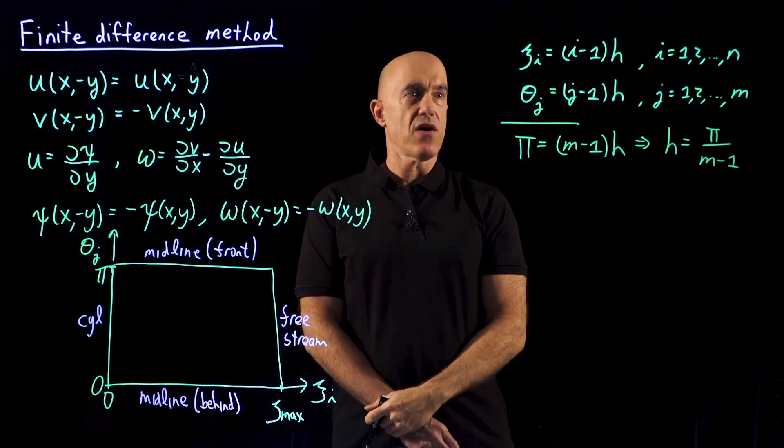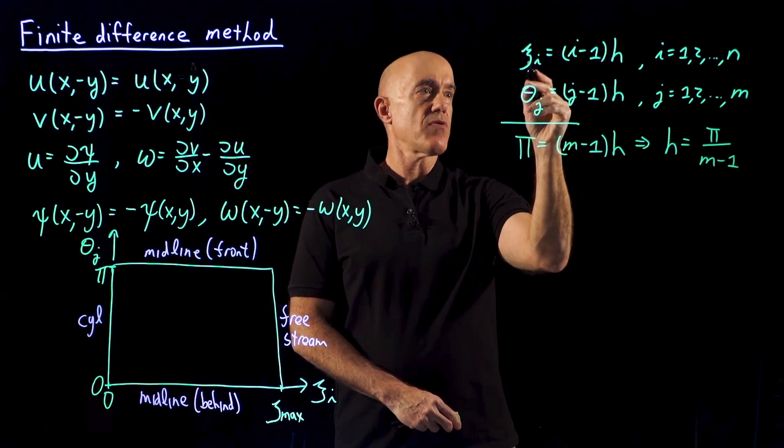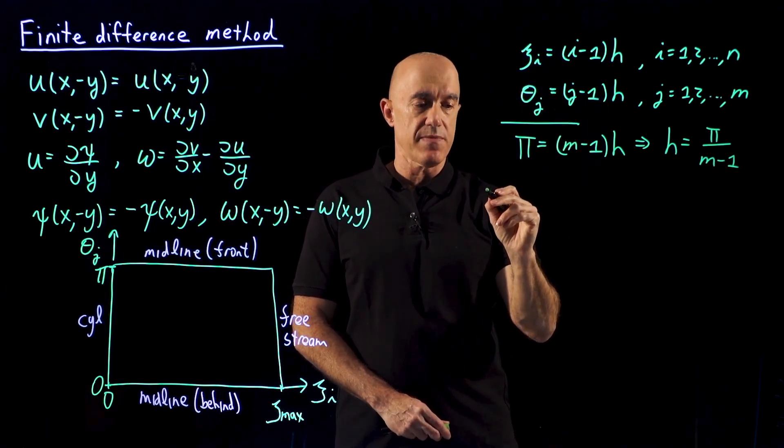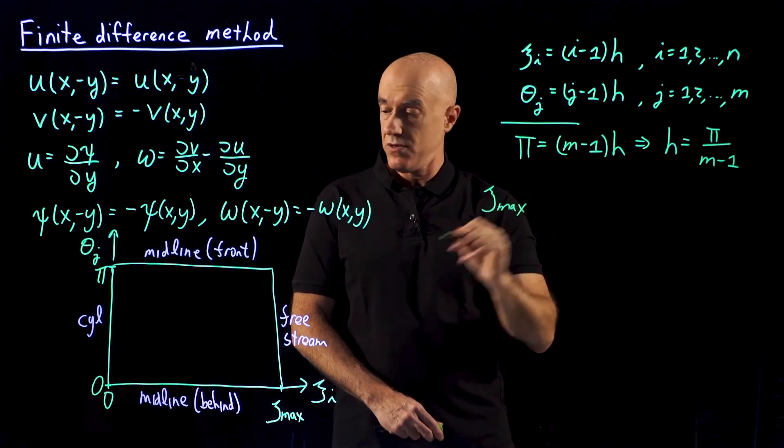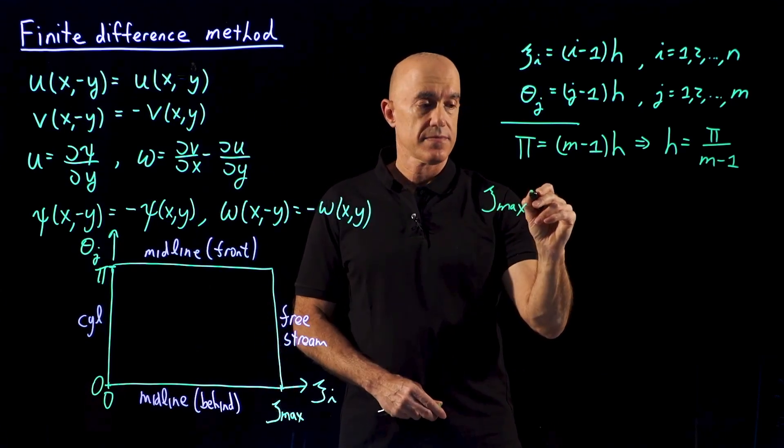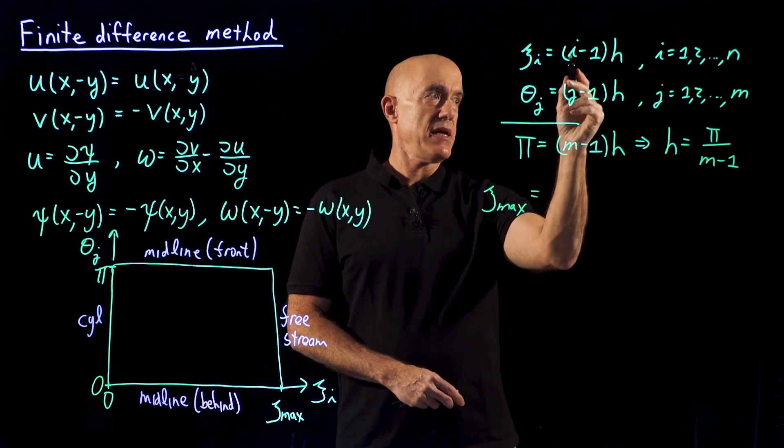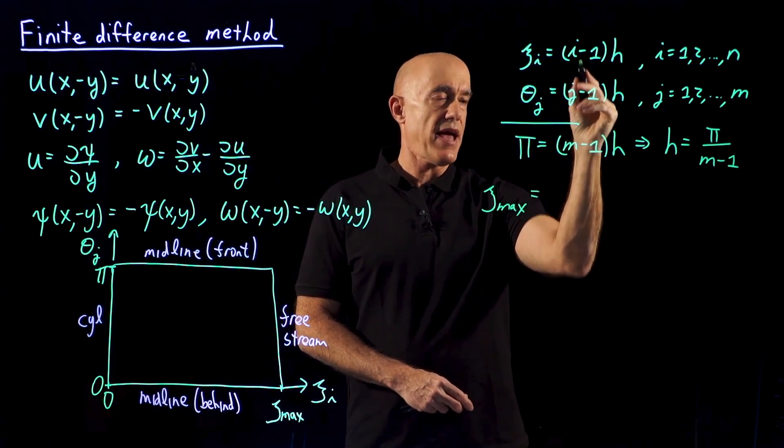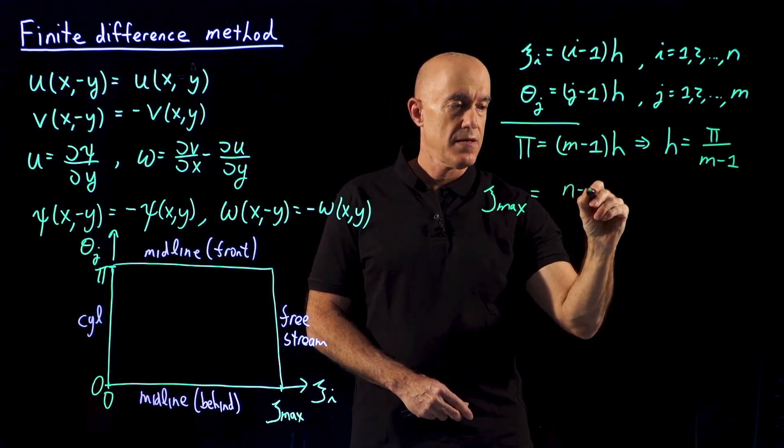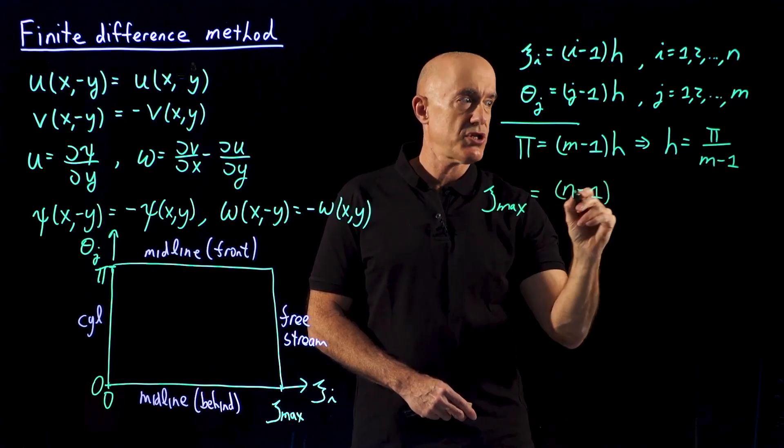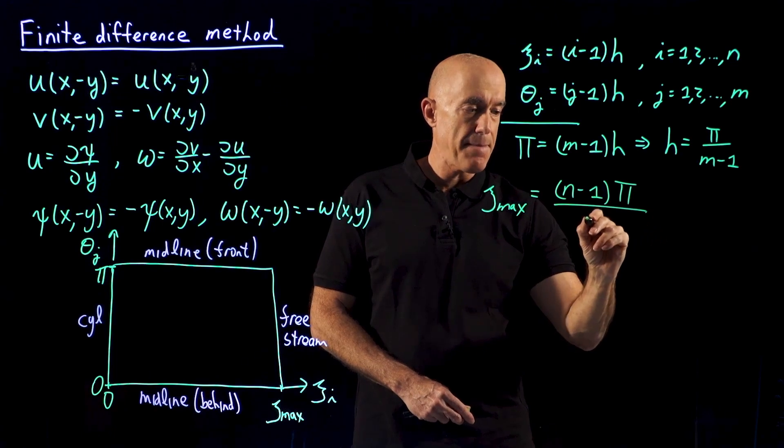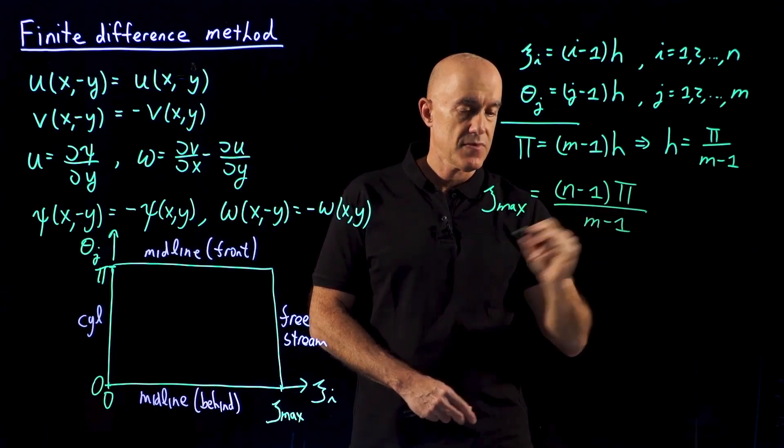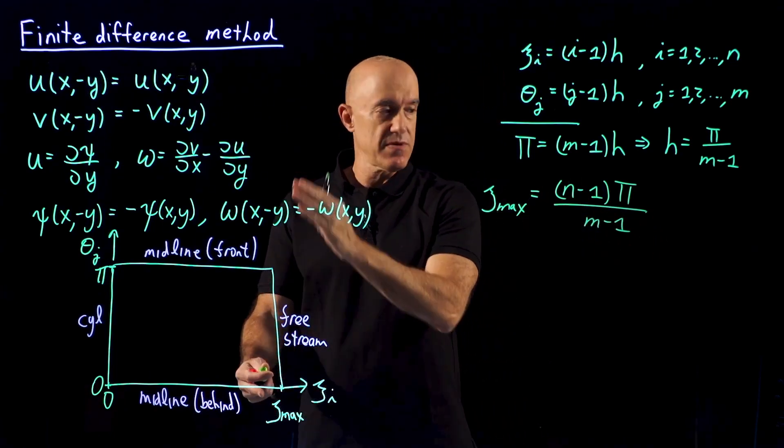So that's our grid spacing. Now we can also figure out what the maximum value of ξ is. The maximum value of ξ is going to be i=n, so (n-1)h, which is π/(m-1). And that will be the maximum value here.